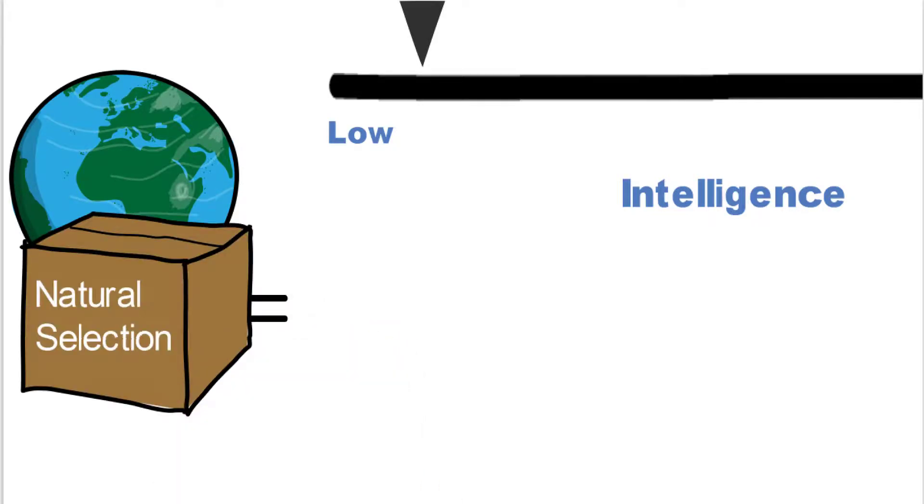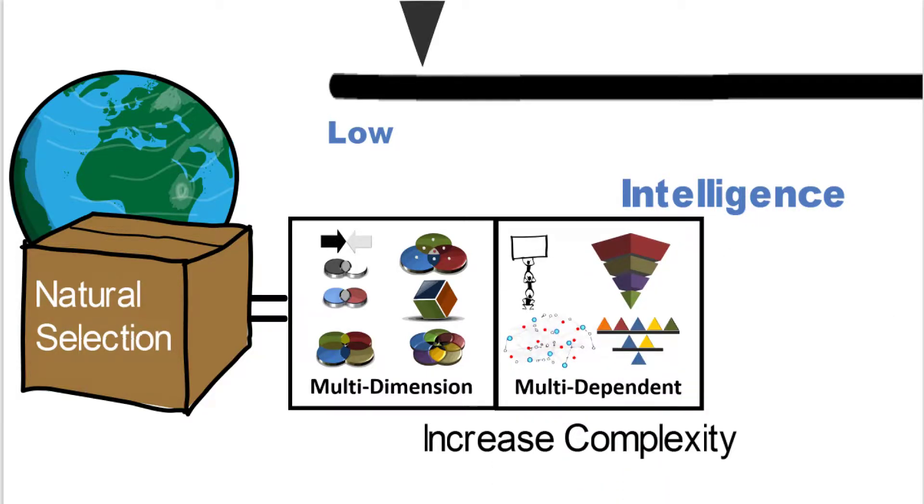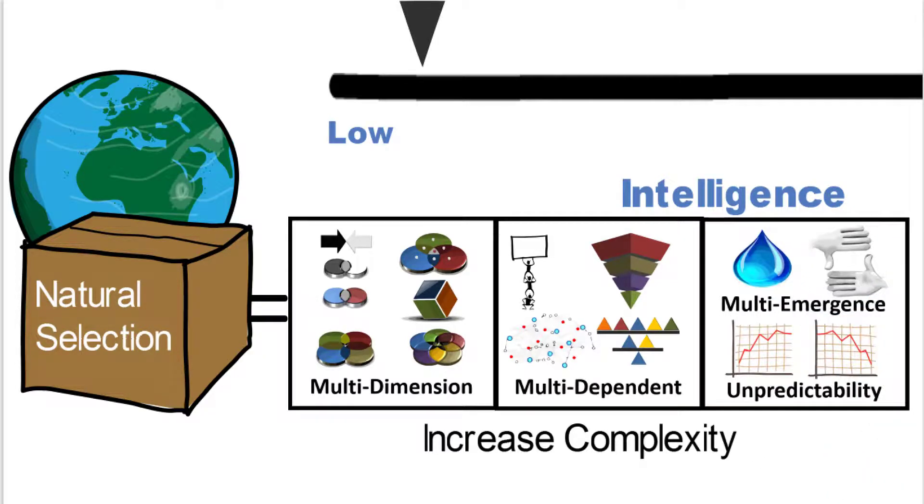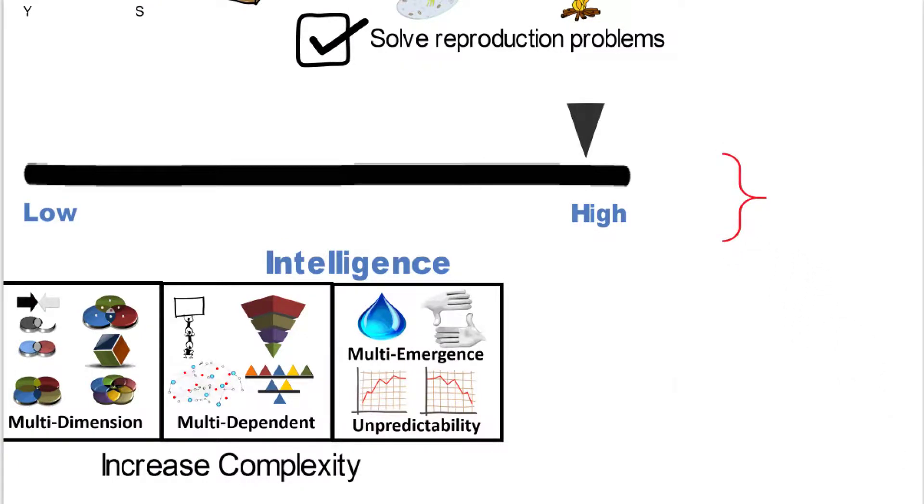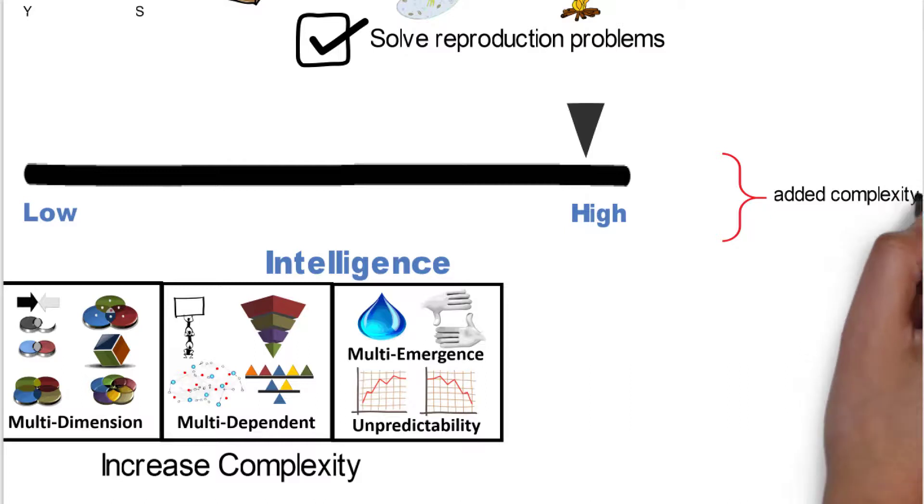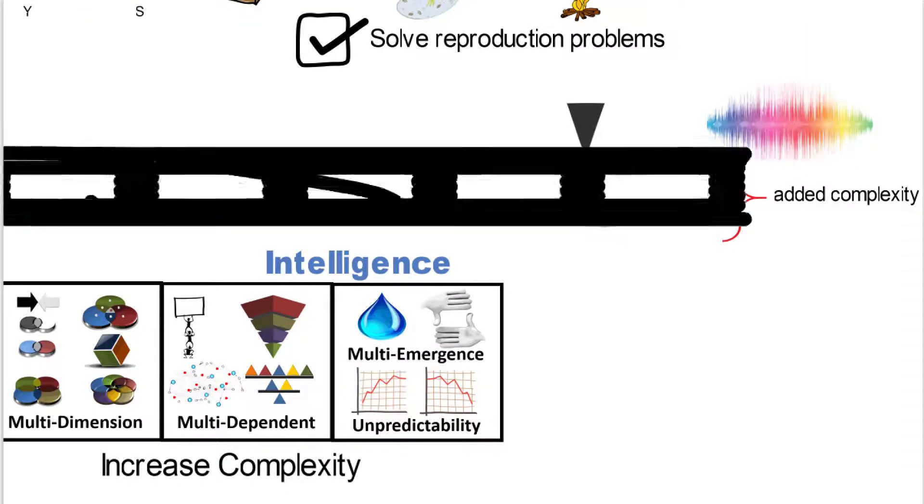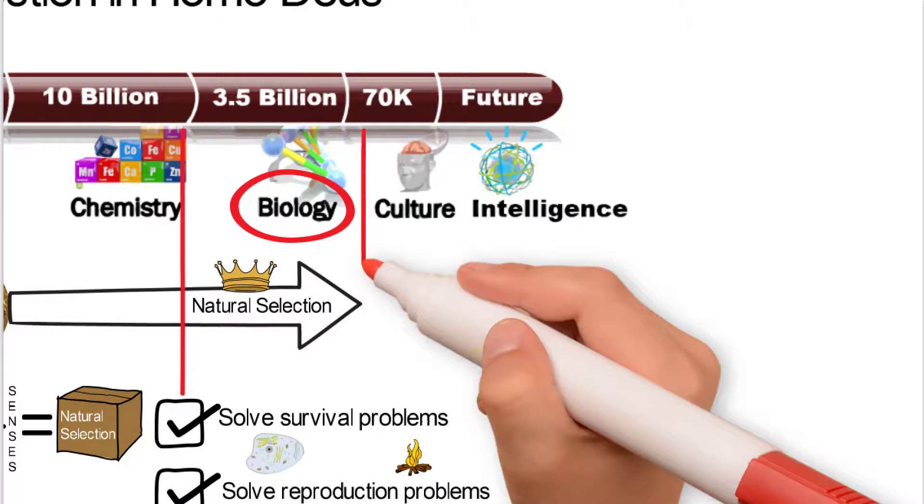But as the world kind of matured, the world got more complex, and natural selection itself got more complex. It started to deal with things like multiple dimensions. It had to deal with multiple dependencies, where we have inheritance issues, and then it also got into where it had to deal with emergence and unpredictability. So all of a sudden, the complexity increased, and the intelligence also increased. The added complexity not only added the idea that we're still along the line of low to high, but also it actually added color to it. It basically gave it color and dimension, so intelligence became a much more robust item.